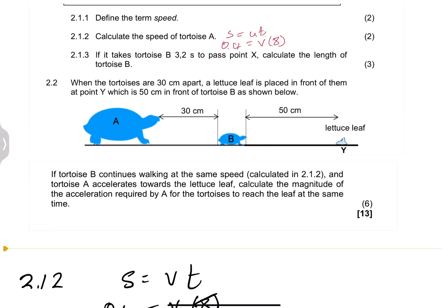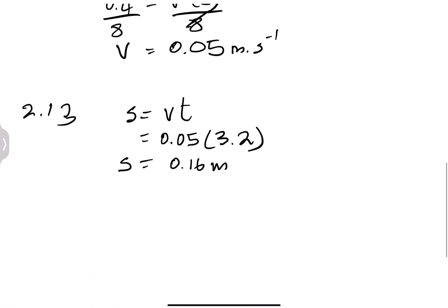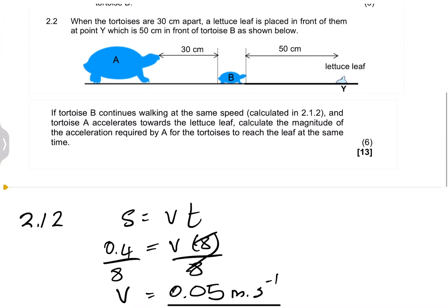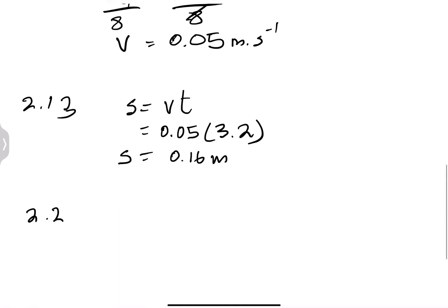Now they say when the tortoises are 30 centimeters apart, a lettuce leaf is placed in front of them at point Y, which is 50 centimeters in front of tortoise B. If tortoise B continues walking at the same speed calculated in 2.1.2, which is 0.05, and tortoise A accelerates towards the lettuce leaf, calculate the magnitude of the acceleration required for tortoise A to reach the leaf at the same time.